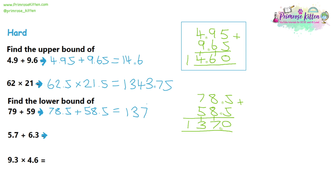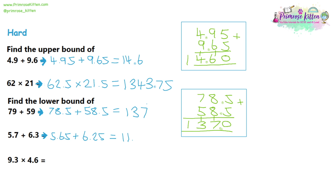Moving on to question four, it's a lower bound. This one is written to one decimal place, so I'll guess it's been rounded to one decimal place. We go 0.05 below these numbers to find the lower bound. So that gives us 5.65 plus 6.25. Doing some mental arithmetic: 5+6=11, 0.6+0.2=0.8, and 0.05+0.05=0.10, giving 11.9.